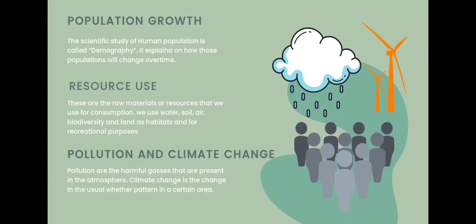Population growth is the increase in the number of people in a dispersed group and can cause an imbalance between growth and deaths. Resource use refers to the raw materials used for daily consumption, like water, soil, air, biodiversity, and land as habitats for recreational purposes. Pollution and climate change involve harmful gases present in the atmosphere — pollution results in climate change, which is the change of usual weather patterns in a certain area.